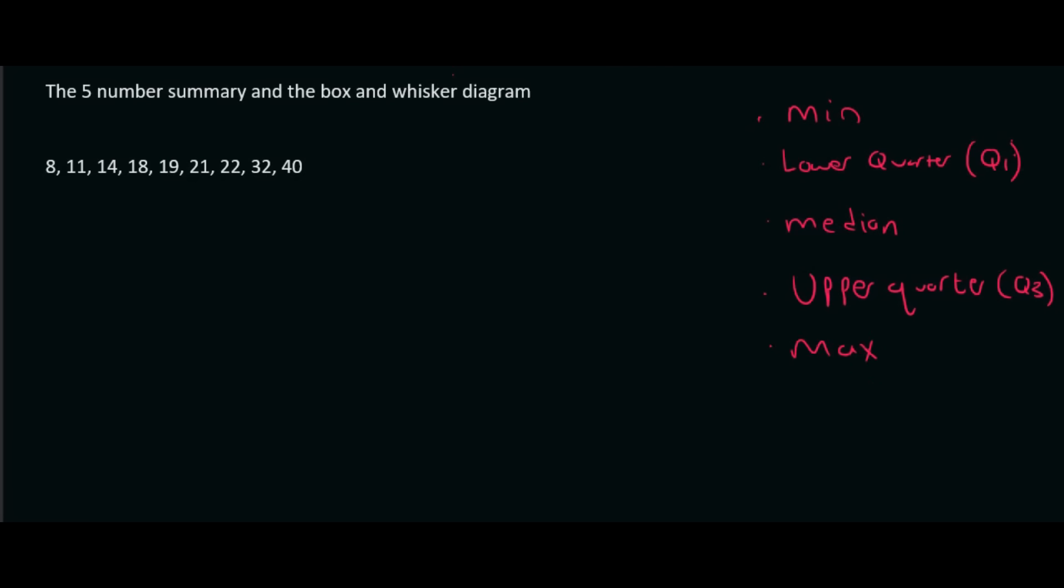So the minimum value for this sequence that is given over here would be 8. The lower quartile, remember quartile is n plus 1 over 4, so the n is the number of values. So that's 1, 2, 3, 4, 5, 6, 7, 8, 9. So 9 plus 1 over 4, which is 2.5. That's not the answer, that's the position.